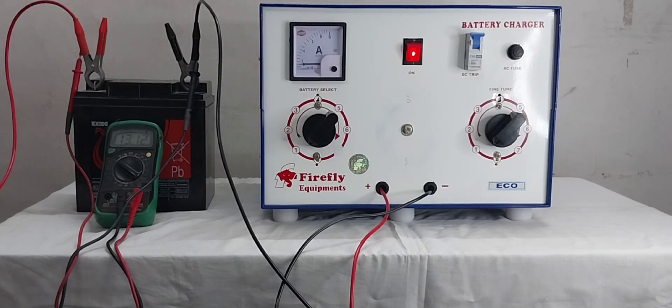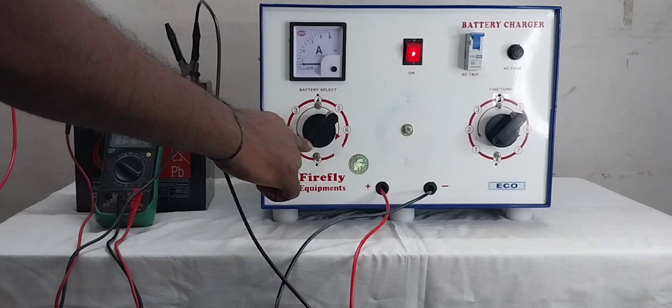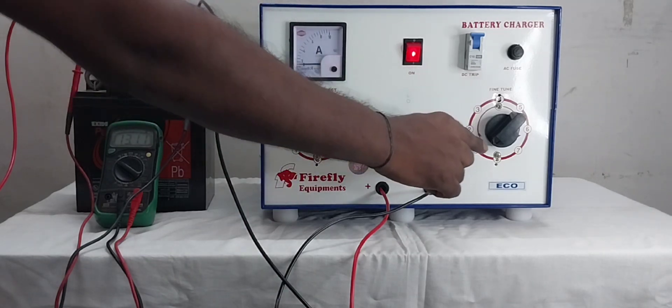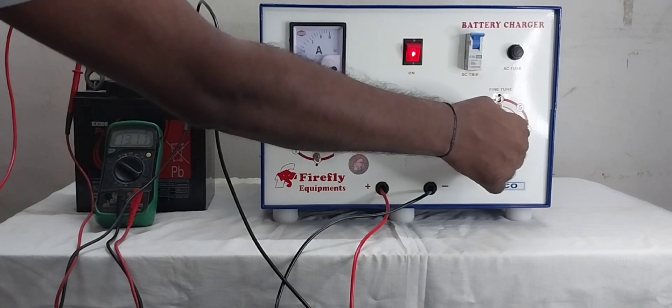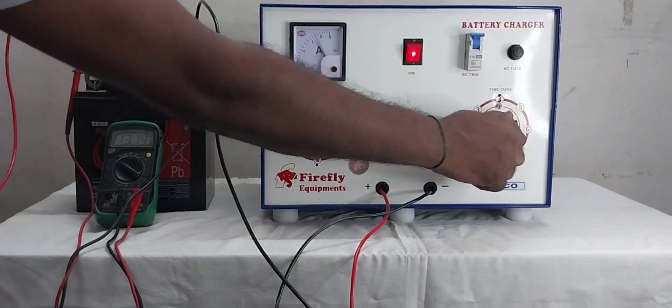We have connected one battery, so battery selection 1. Now we are increasing charging ampere. So fine tune we are adjusting rotary. Step 1, Step 2, Step 3, Step 4, Step 5.